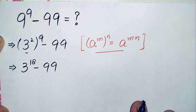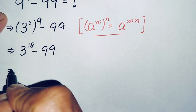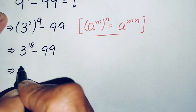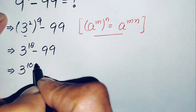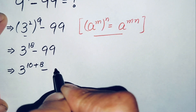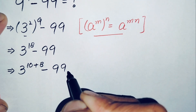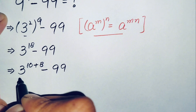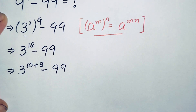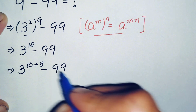Next, we will try to change this power 18 to the sum of 10 plus 8. So 3 to the power 18 can be written as 3 to the power 10 plus 8, minus 99. Here we will use another exponential identity: a raised to power m plus n, which is equal to a raised to power m times a raised to power n.